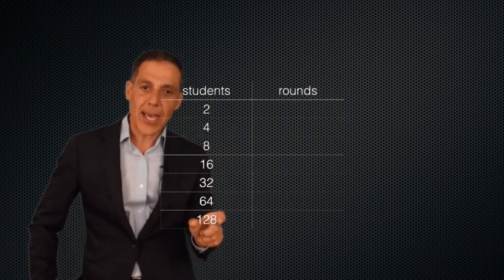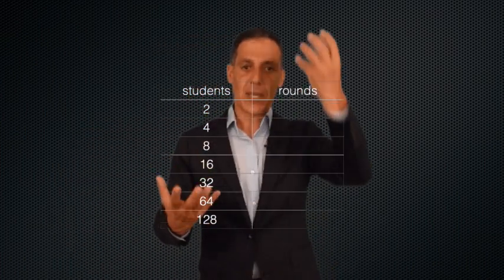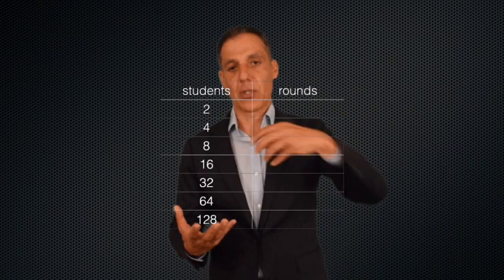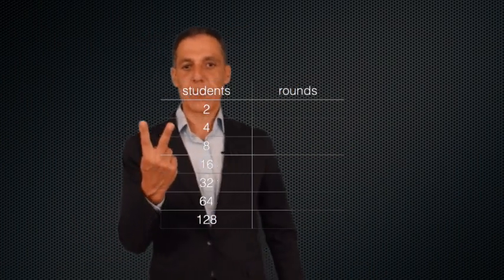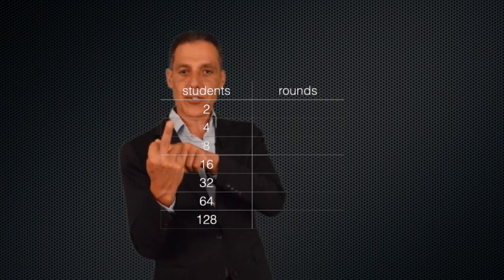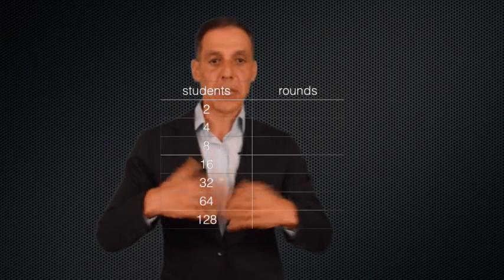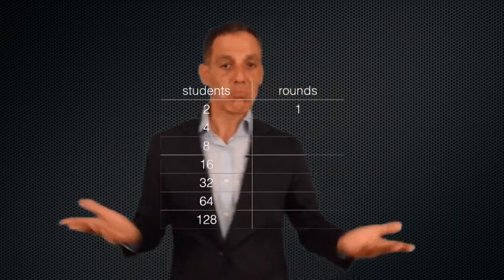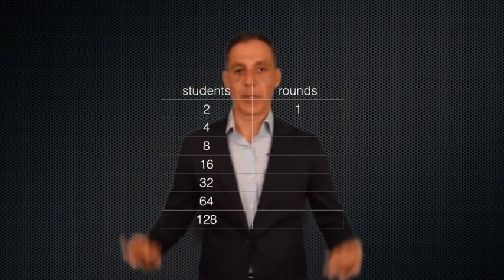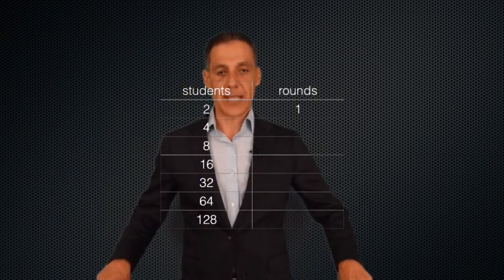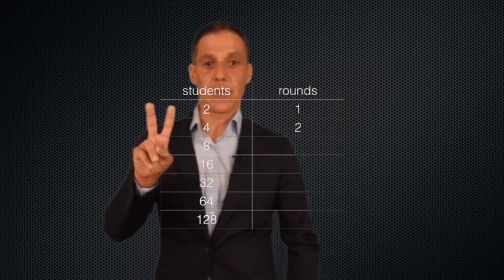So let's think about that again. These are going to be the number of students, and these are going to be the number of rounds. How many people stand up, half sit down, add the number. So if there's two people in the class, what's going to happen? Two people stand up. They both have one. One person sits down. They pass that one over to this person, and you've got two, and you're done. So there's only one round to be done. Four people in the class. Four people stand up, two people sit down, and then one person sits down. So there's only two rounds there.